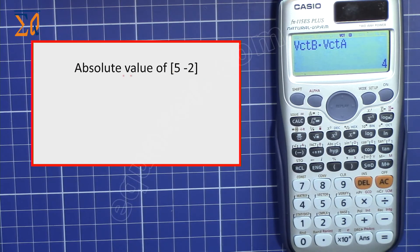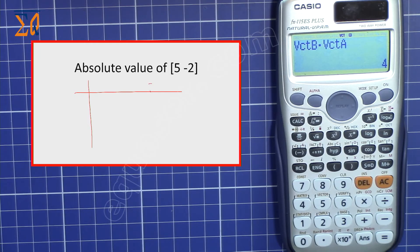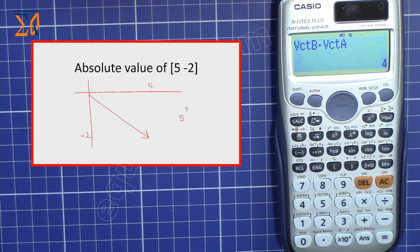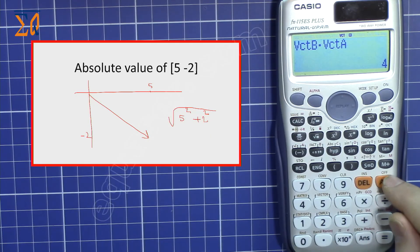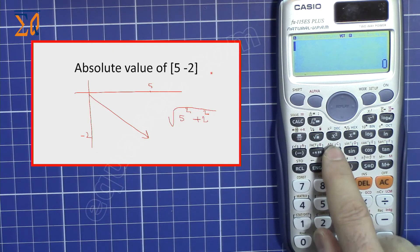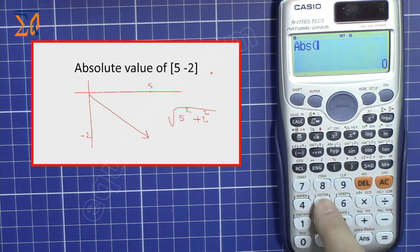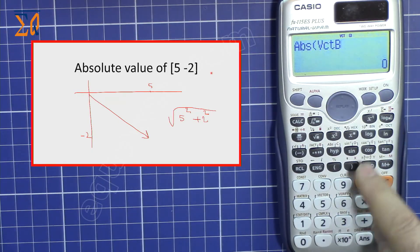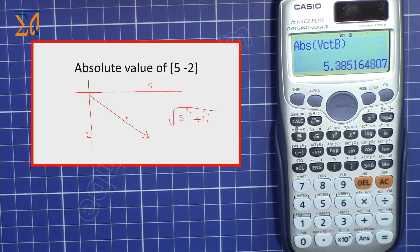To find the absolute value — the magnitude of a vector — for example a vector with values five and minus two, instead of manually computing the square root of five squared plus two squared, use the calculator's ABS function. Press Shift, then hyp (whose second function is absolute/ABS), then Shift, five, four for vector B, and press equal. The magnitude is 5.385.